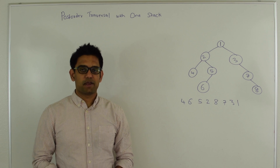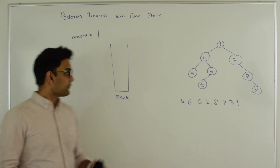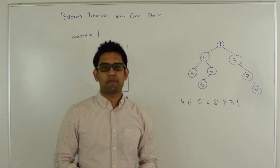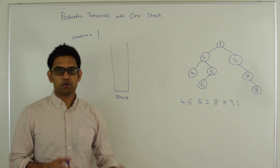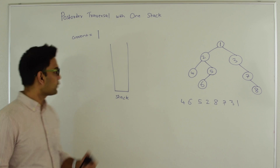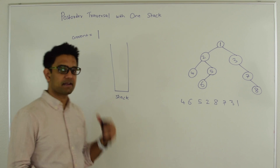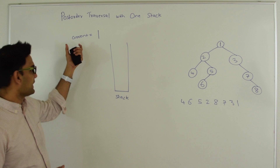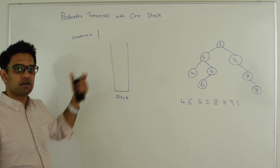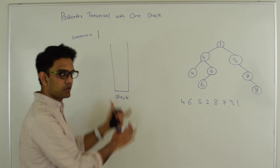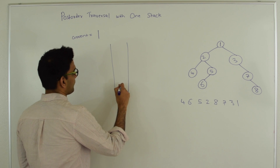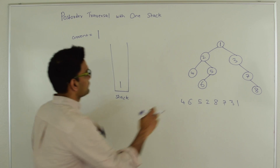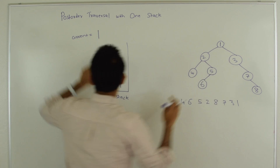Next let's see how we are going to do this algorithm. Here we have a current and a stack. Current points to the root of this binary tree. We are going to go into the while loop and stay in it until both current is null and stack is empty. First we check: is current null? Current is not null, which means we push the current node into the stack. So we push 1 into the stack and set current equal to current's left, which is 2.